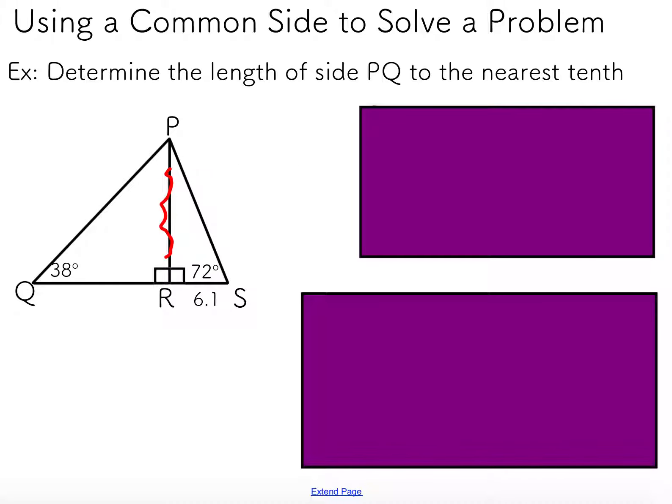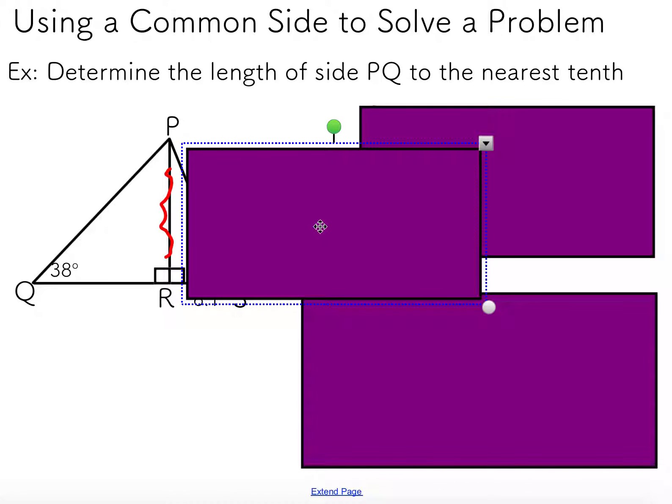If I ignore this triangle on the right and just focus on the one on the left, there's no way that I have enough information to solve for the height of that triangle. I've got an angle, but I don't have enough information on the sides. I'm trying to solve for this side, but there is no way that I can solve for that side.